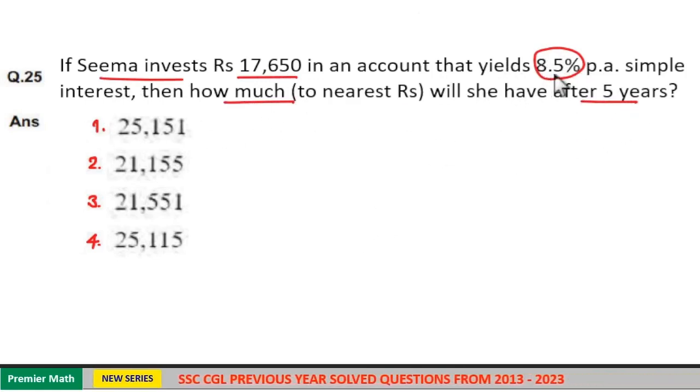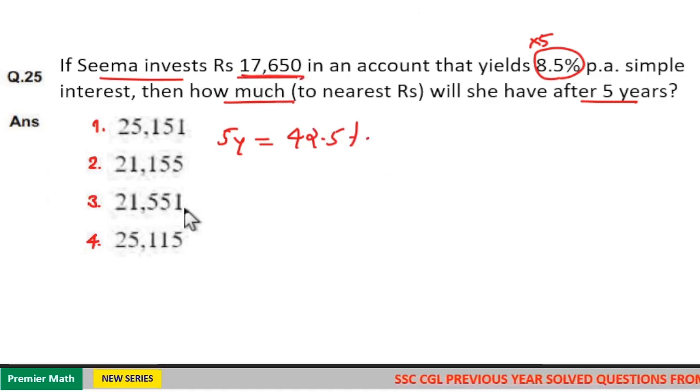Here, in 1 year, 8.5% is the simple interest. So, in 5 years, 8.5 into 5. 8 into 5 is 40. 5 into 5 is 25. So, in 5 years, simple interest is 42.5% of the sum.